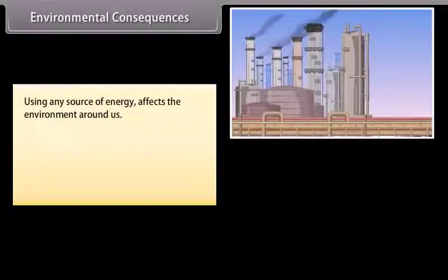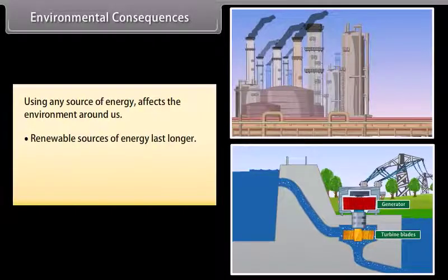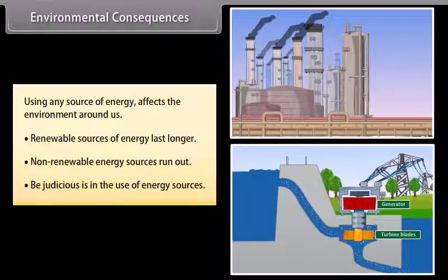Environmental consequences. Using any source of energy affects the environment around us. Therefore, before exploiting any energy source, ensure that it does not disturb the environmental balance and is harnessed judiciously. Renewable sources of energy last for as long as they keep generating, whereas non-renewable energy runs out. We have to be judicious in our selection of energy, the purpose of the energy being used, and the actual usage of the energy.